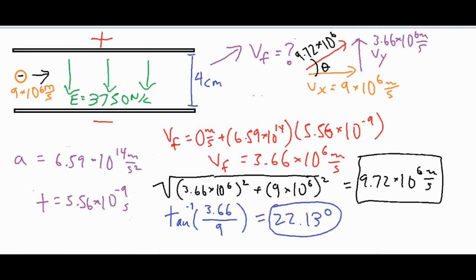To sum things up: when working a problem like this, use the horizontal and vertical components. The horizontal component is constant, and the vertical component results from the acceleration due to the electric field. Once you combine those two vectors you get the final resultant exit velocity. If you want the exit angle, use an inverse trig function. Hope that was helpful — thank you for watching.